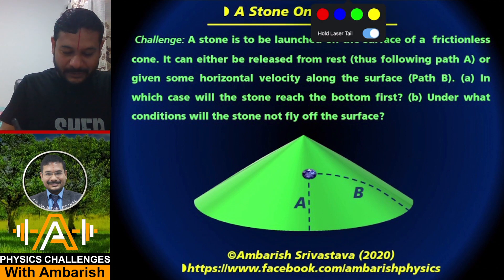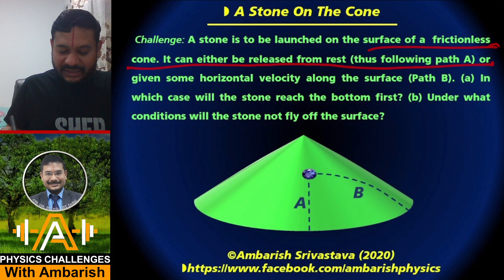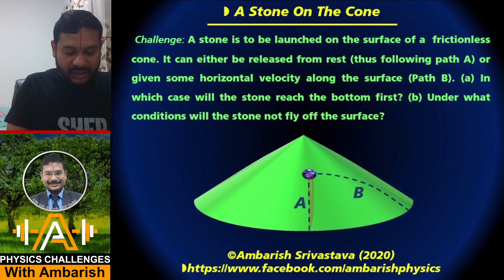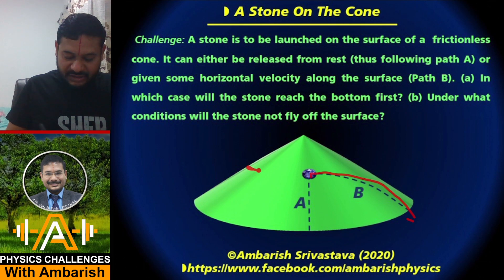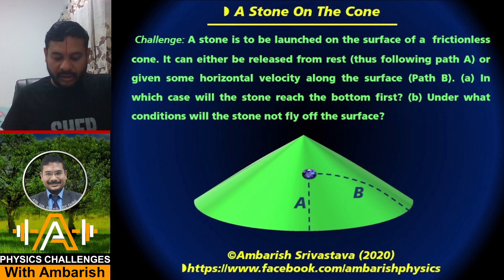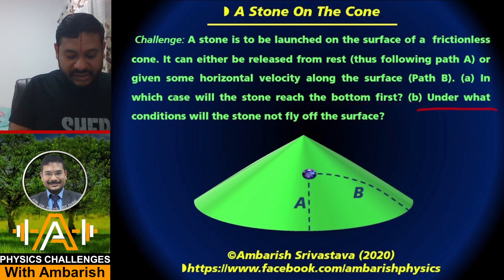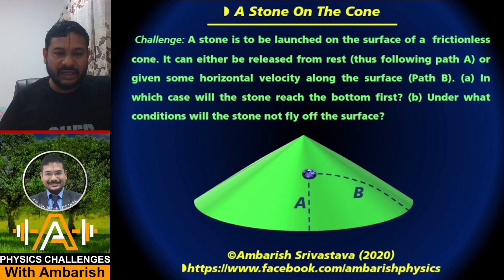Let me read out the problem. A stone is to be launched on the surface of a frictionless cone. It can either be released from rest, thus following path A, or given some horizontal velocity along the surface — path B. Imagine there is a horizontal circle, and you can give the stone a velocity along the tangent of this circle so it follows path B. In which case will the stone reach the bottom first? And under what conditions will the stone not fly off the surface?